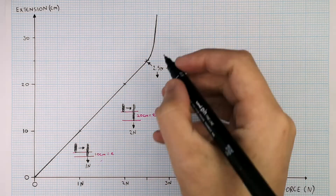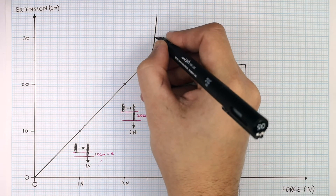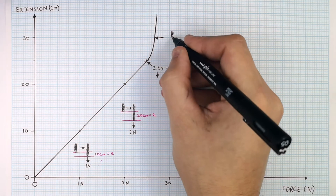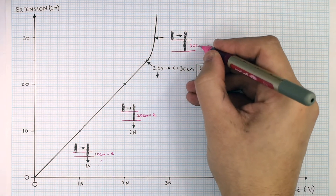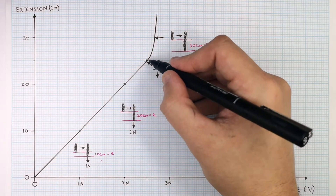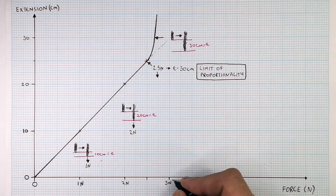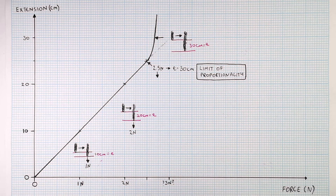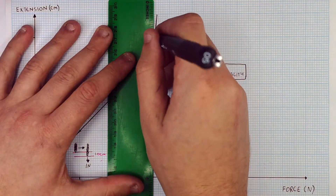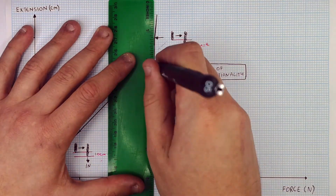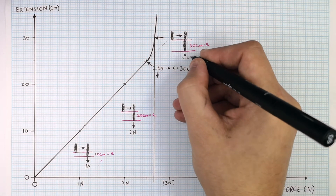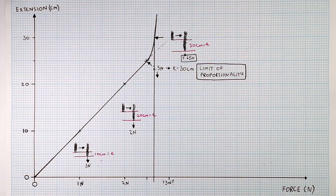We now apply a force of 2.65 newtons to the spring, and the extension of the spring is 30 centimetres. If it were still directly proportional, we would only get an extension of 30 centimetres by applying a force of 3 newtons. However, with 2.65 newtons we already get 30 centimetres. Remember: when the graph starts to curve, the extension is not directly proportional to the force.